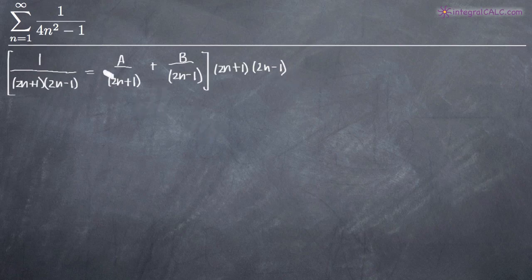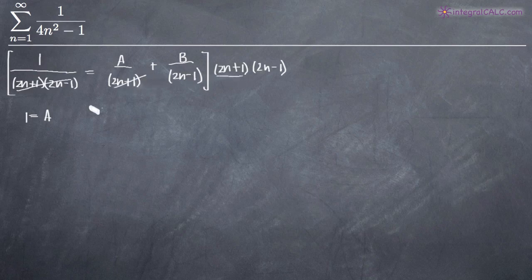That's going to cancel the entire denominator on the left, so we'll just be left with 1 equals. For the term involving A, the 2n plus 1 cancels and we're left with A times 2n minus 1. For the second fraction with B, the 2n minus 1 cancels and we're left with B times 2n plus 1.